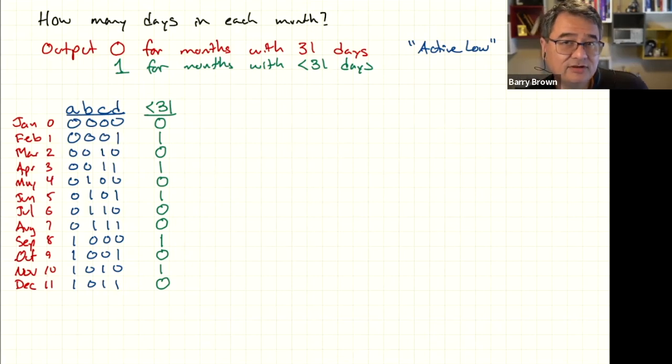Just like before, in order to construct this Karnaugh map, we're going to focus our attention on the rows where there's a one. You also may be wondering, why didn't I just use a one for the months that had 31 days? Why did I choose to make it a zero? Well, honestly, it's because the Karnaugh map's more interesting if you do it that way.